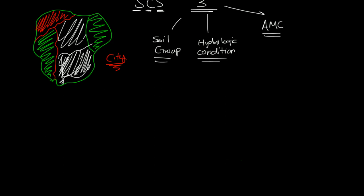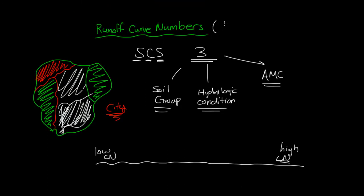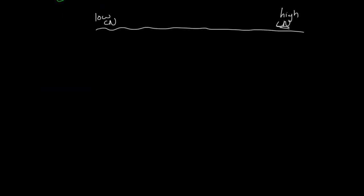And how these numbers work, well, let's say you have a little line here, and we have low curve numbers here, and we have high curve numbers here. And CN is kind of the notation we use to specify a curve number, a runoff curve number.